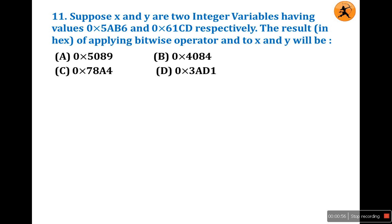Octal numbers start from 0 and hexadecimal numbers start from 0x. Hexadecimal numbers contain a total of 16 characters: 0 to 9 and A to F.